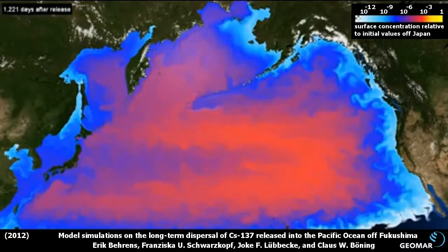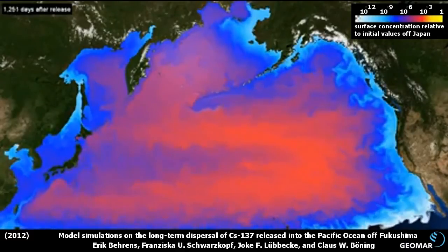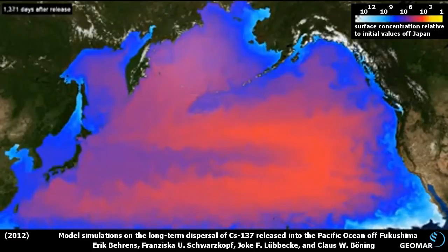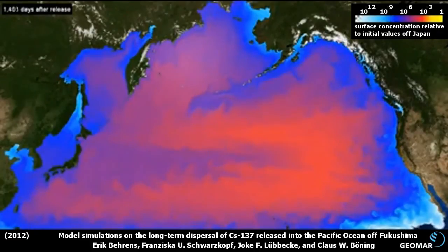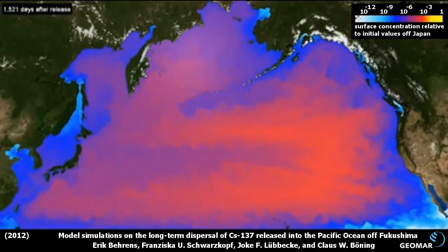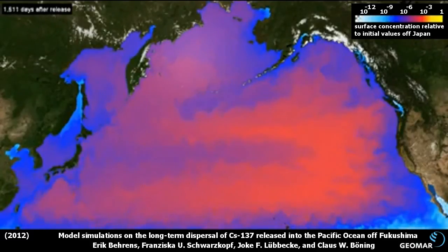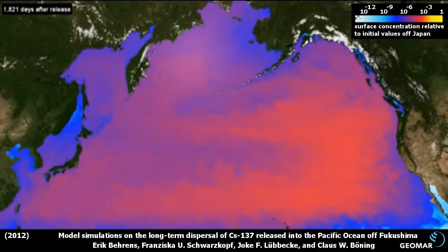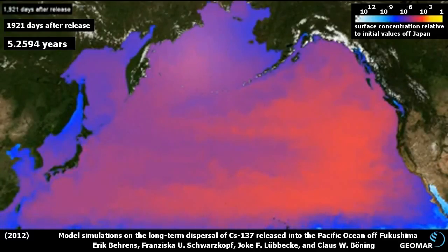After four years, the maximum concentration has dropped by three orders of magnitude and the entire northern Pacific is filled with a certain amount of tracer. When the peak concentration reaches the North American coast after about five to six years, it has been diluted by four orders of magnitude. The concentration levels from now on tend to homogenize over the entire basin.